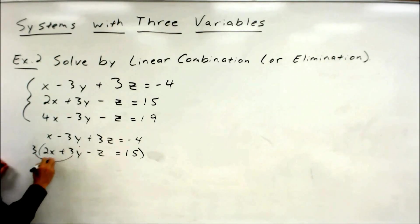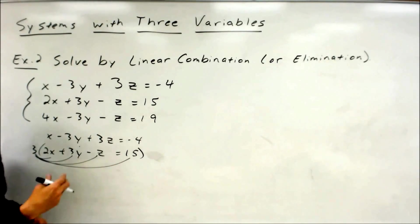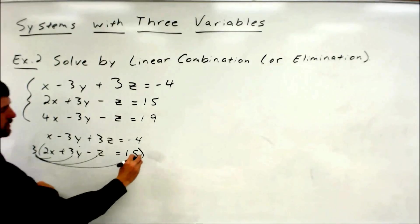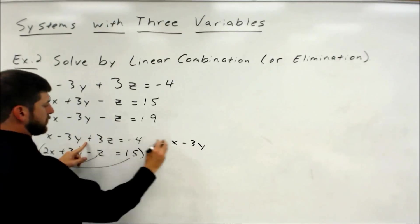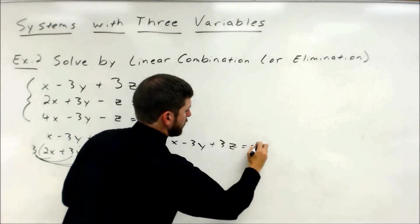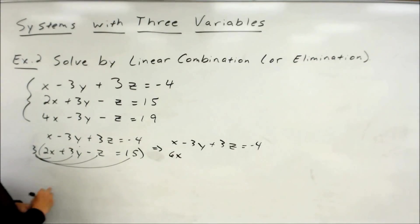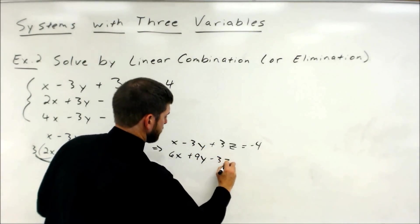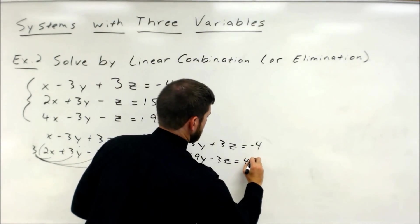Distribute it to everything — make sure you get it all the way to the constant, because the most common mistake is forgetting to do the other side of the equal sign. So the first equation doesn't change: x minus 3y plus 3z equals negative 4. Second equation: 3 times 2x is 6x, 3 times 3y is 9y, 3 times negative z is negative 3z — opposite coefficients. And 3 times 15 is 45.